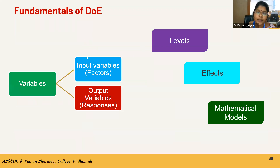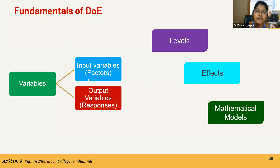The fundamental aspects for designing an experiment as seen in the design expert software are: variables — we have two types: input variables (also called factors) and output variables (also called responses). We also need to know about levels at which these variables are considered, and about effects and mathematical models.